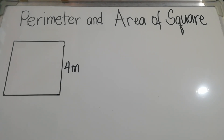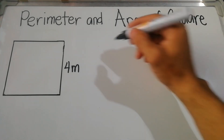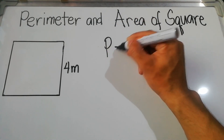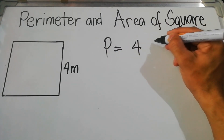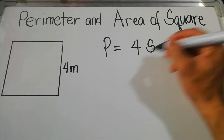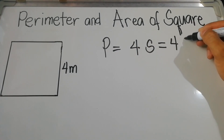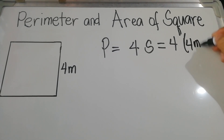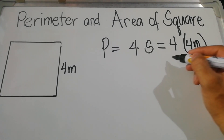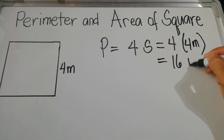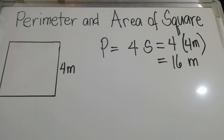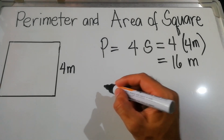Let us have the first example: the side is equal to 4 meters. Without writing the other measurements, we all know that all sides of the square are 4 meters. Therefore, the perimeter is equal to 4 times s, which is 4 times 4 meters.